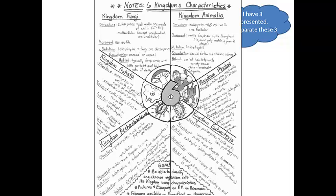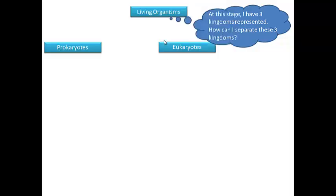However, rather than use the number of cells, I will use the type of cell. Some kingdoms are made up only of prokaryotes, while others are made of eukaryotes. So I create two boxes with these terms and connect them to my living organisms box.